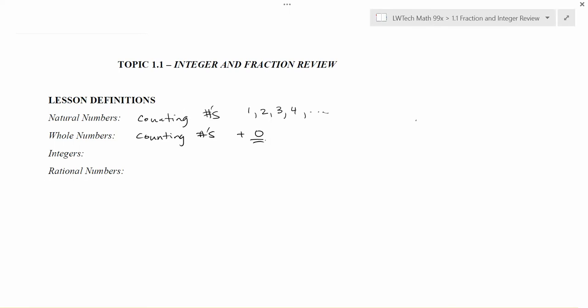The next type of value or number system that we like to talk about is integers. Integers take in all of our whole numbers, but then we add in their opposites. So in this particular instance, when we talk about the set of all integers, we're talking about all the counting numbers, one, two, three, four, but also all of their negative counterparts.